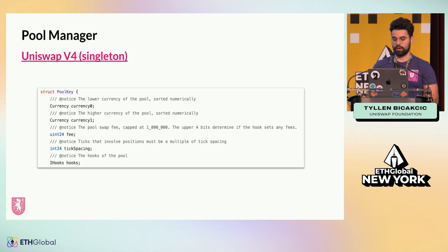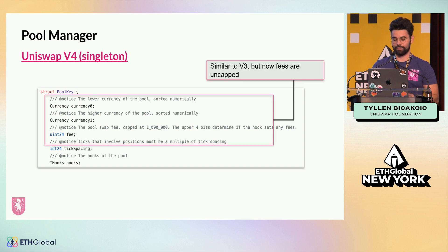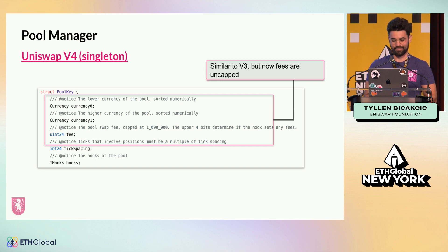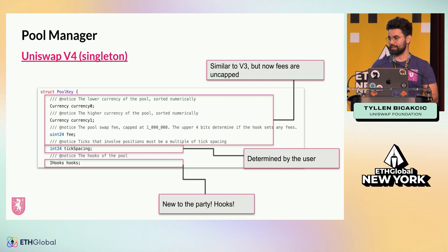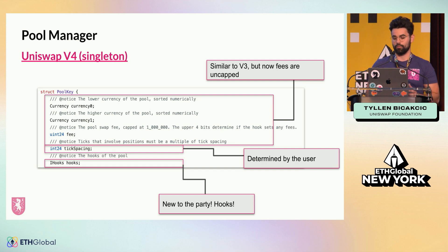The other thing that's different is, as we saw in v3, there were only three parameters when creating a pool. Now you have more parameters — you still have your fee tiers and your currencies, but fee tiers are now fully customizable by you as a developer to any value you want. No longer is it just four fee tiers — you can set your fee tier to 99% and see how many LPs rush to that pool. Tick spacing is also now determined by you. And new to the party: hooks. Hooks are their own separate contracts that live in pools, can be developed by you, and will dictate how the pool performs. We'll dive into hooks a little bit later.